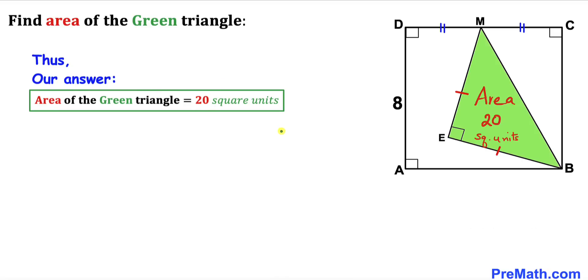So the area of this green triangle turns out to be 20 square units — that's our final answer. Thanks for watching, and please don't forget to subscribe to the channel for more exciting videos.